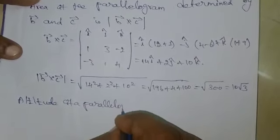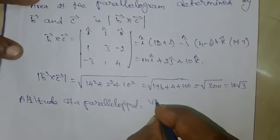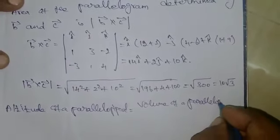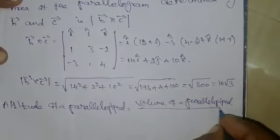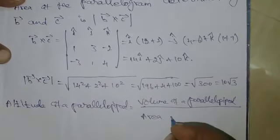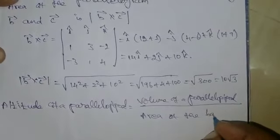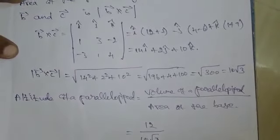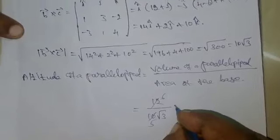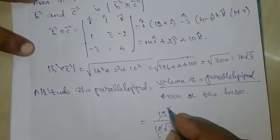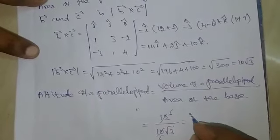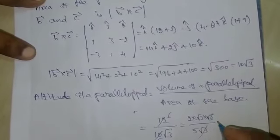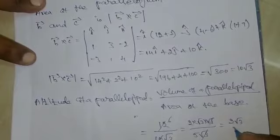The altitude of the parallelepiped equals the volume of the parallelepiped divided by the area of the base. Altitude = 12 / (10√3). Simplifying: 6 / (5√3) = 6√3 / 15 = 2√3 / 5. We get the value 2√3 by 5.